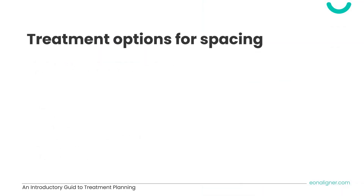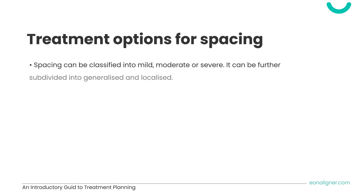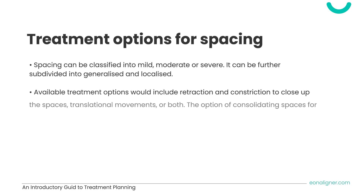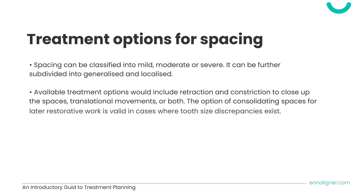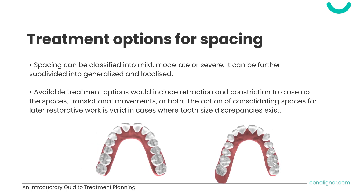Treating spaces using aligners — whether mild, moderate, or severe, localized or generalized — can be achieved through the retraction of anterior teeth, constricting the posterior teeth, mesialization or distalization of teeth, or a combination of those movements.